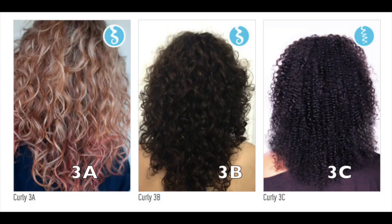Type 3 hair is curly hair — no two ways about it. If you pull out a strand of type 3 curly hair, you're going to notice it has a definite S shape. Going between A, B, and C, I like to think of it as going from a capital S to a lowercase s to a Z as the curl pattern gets tighter and tighter. You're not going to get a definite curl pattern in place unless you're using the right products for your hair. Type 3 hair product is probably the most temperamental hair type to work with.